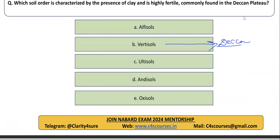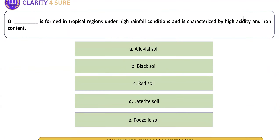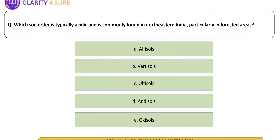Next question involves clay content. Soils formed in tropical regions under high rainfall conditions are characterized by high acidity and high iron content — the right answer is D, laterite. Wherever tropical regions with high rainfall appear, think laterite. Which soil order is typically acidic and commonly found in northeastern India and forested regions? The right answer is Ultisols.